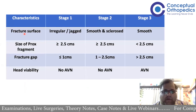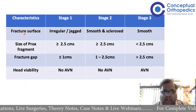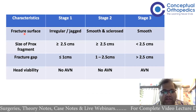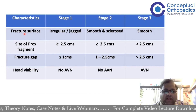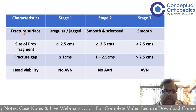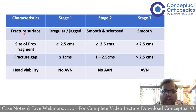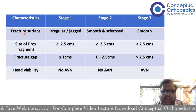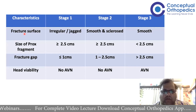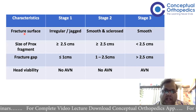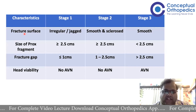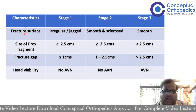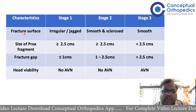Regarding fracture surface — if it is irregular, that means it is relatively fresher. We all know that with time and chronicity, the fracture ends become smoother. Only in acute or relatively recent fractures do we see an irregular fracture surface. So that is stage one. Stage two is smooth and sclerosed, and stage three is smooth.